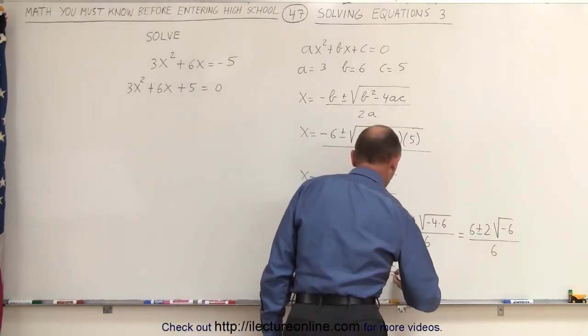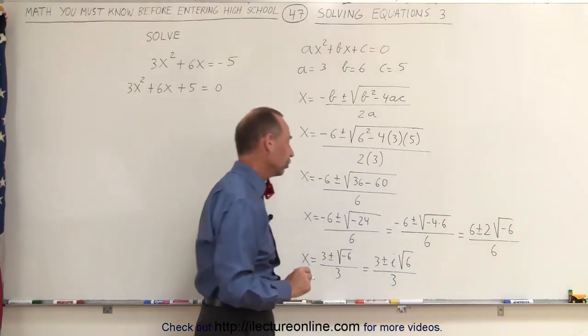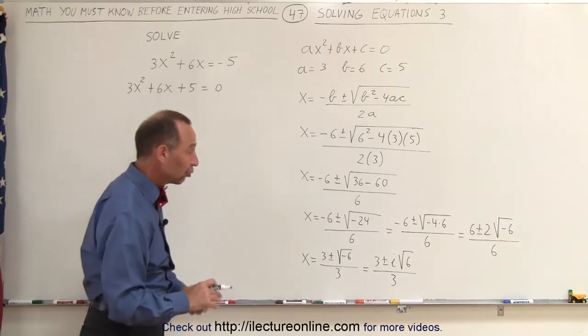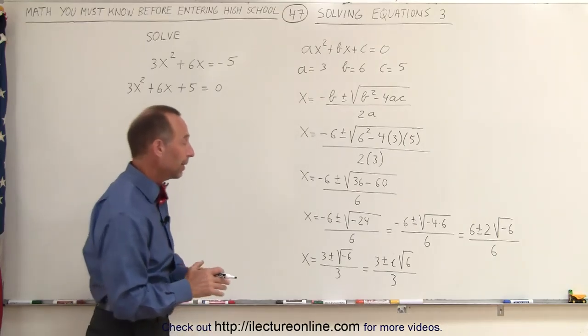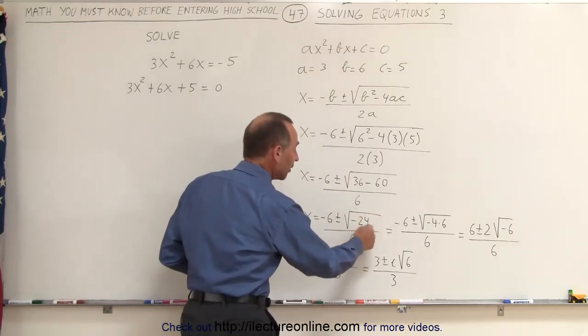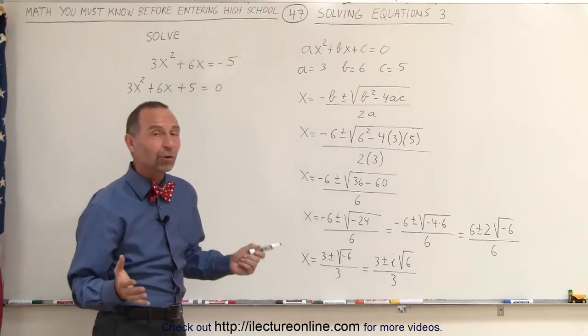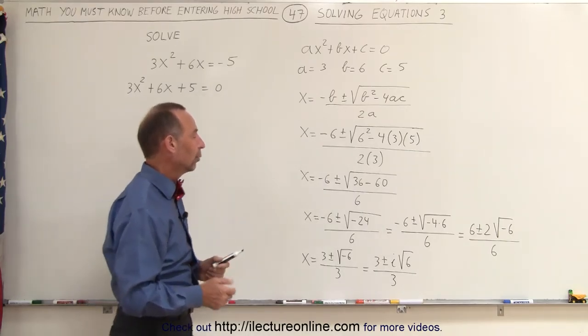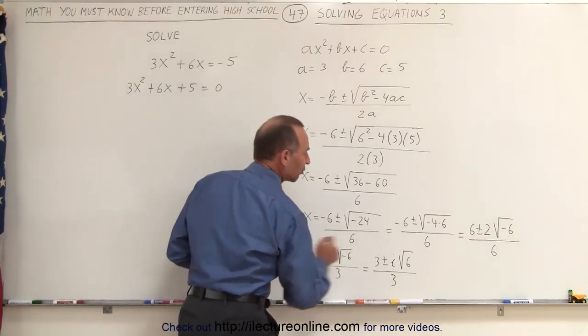And so this then becomes the imaginary solution. So it turns out that there's no real solution to the problem because we ended up with a negative underneath the radical, which means you can only have an imaginary solution, which includes the imaginary number i.